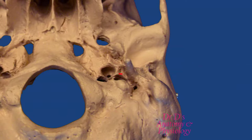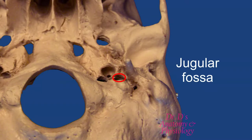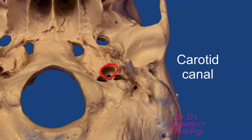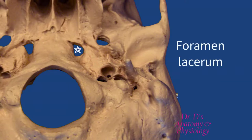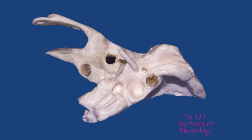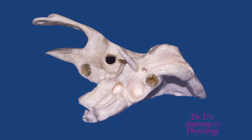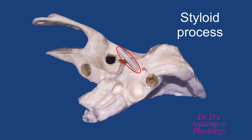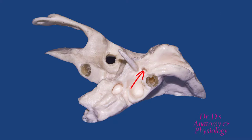Over here we can see the jugular fossa — difficult to appreciate fully from this perspective — and anteromedial to it is the opening to the carotid canal, which travels anteromedially toward the foramen lacerum. Here again is the styloid process, a long slender process that's hard to appreciate from this perspective. And here, between the mastoid process and the styloid process, we find the stylomastoid foramen.